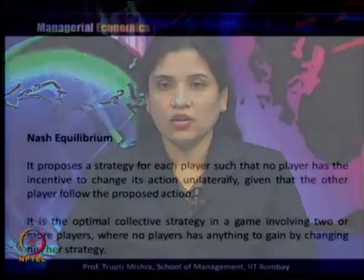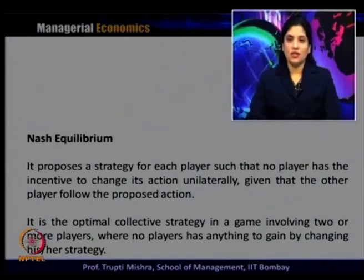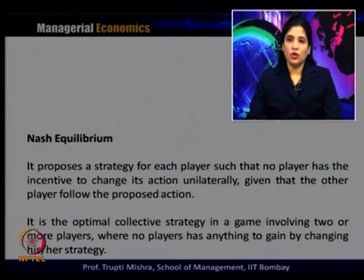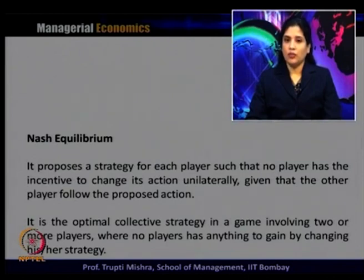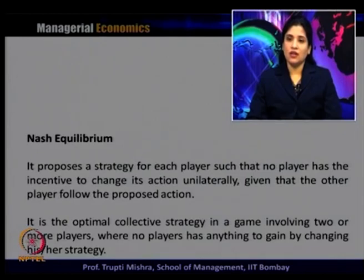As a quick recap, Nash equilibrium is a strategy for each player such that no player has the incentive to change its action unilaterally, given that the other player follows the proposed action. This is the state of balance beyond which whatever effort the players put in, it is not going to change their payoff. It is the optimal collective strategy where no player has anything to gain by changing their strategy.